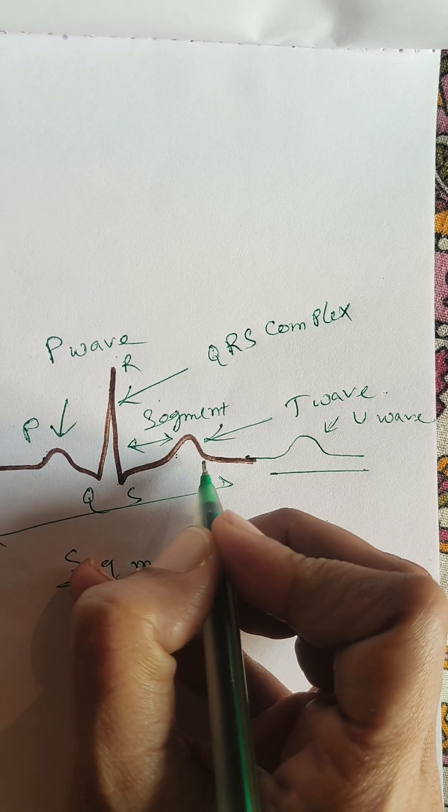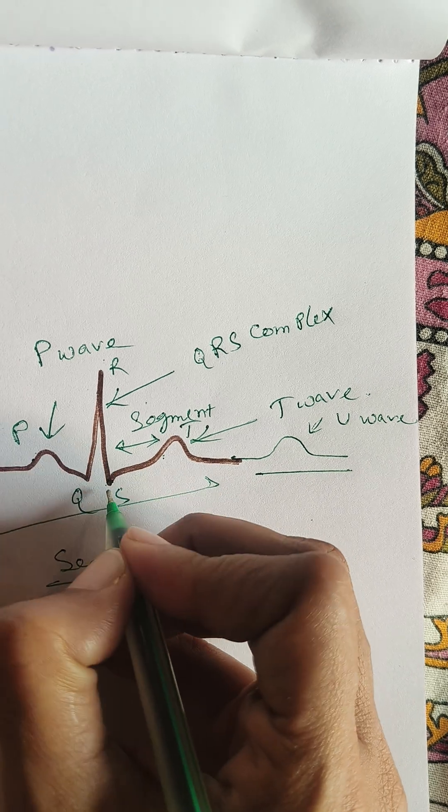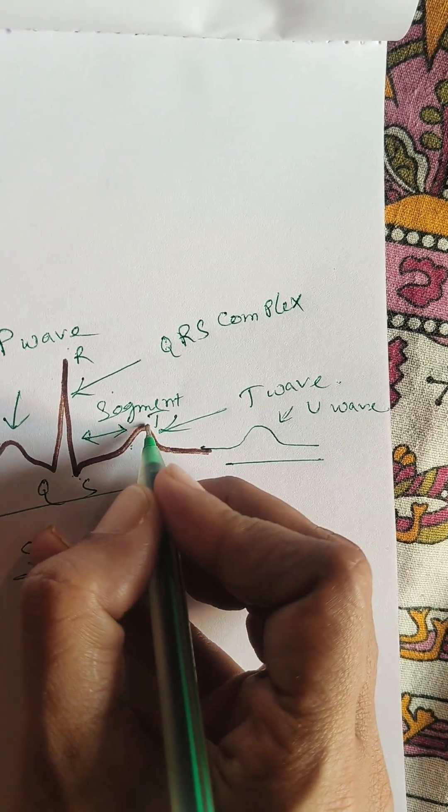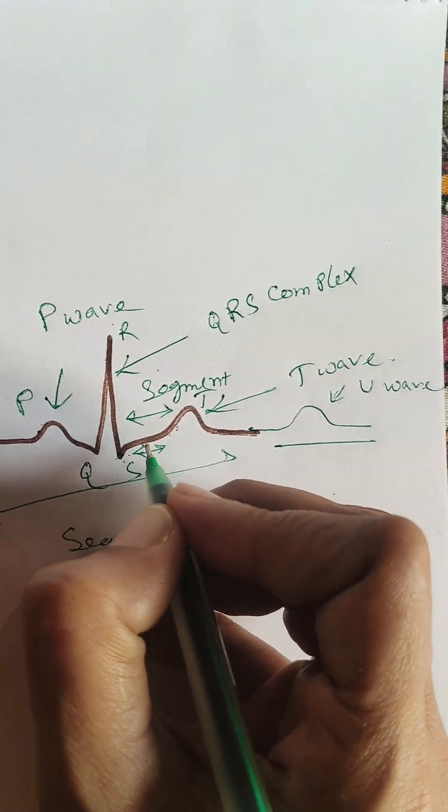This is the segment. This is T wave. So S to T, meaning QRS is ending and T wave is starting. This is the gap. Segment.